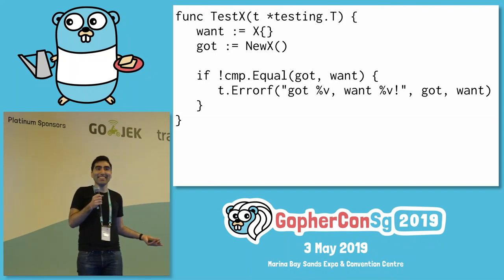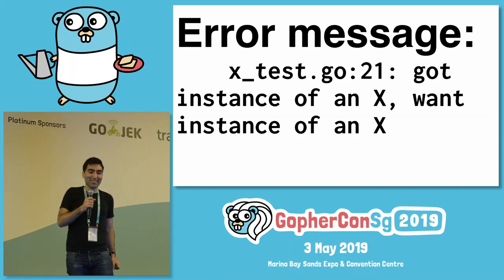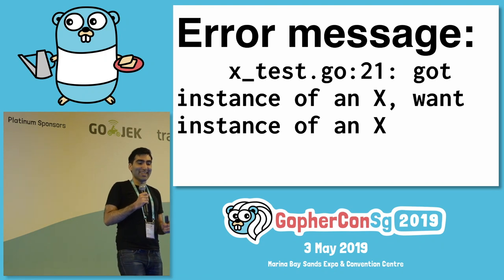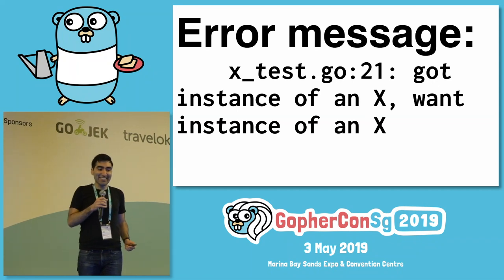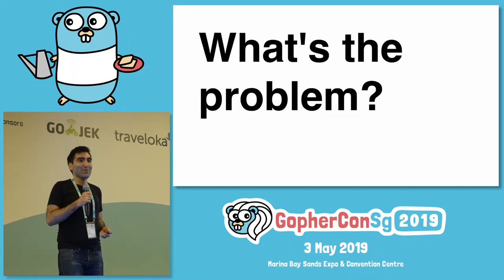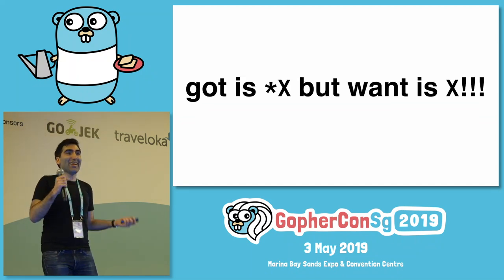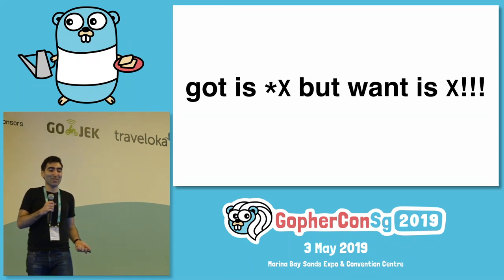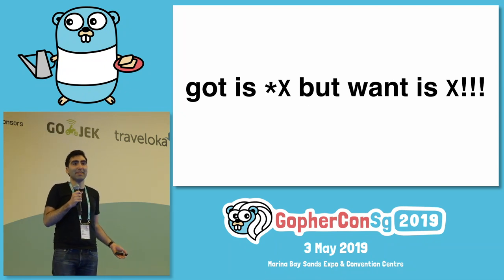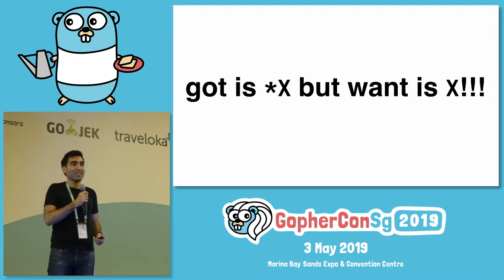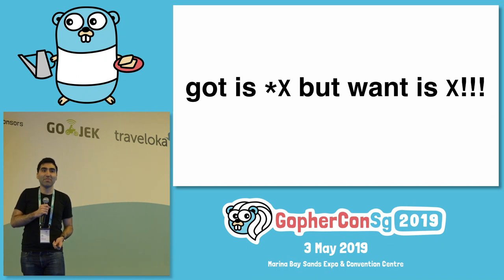This looks fine, right? But we get an error message — they're not equal to each other. Worse than that, the got and the want values are the same. The problem is that got was a pointer to X, returned by the New function. But want was defined as X{}, which is not a pointer. And because they're not the exact same type, cmp.Equal returns false.